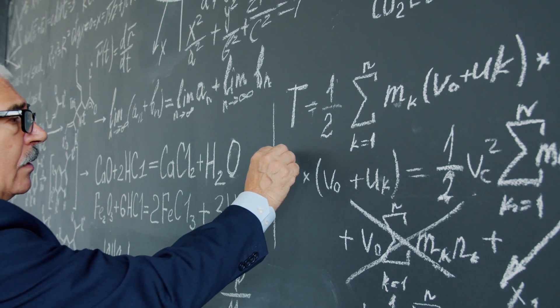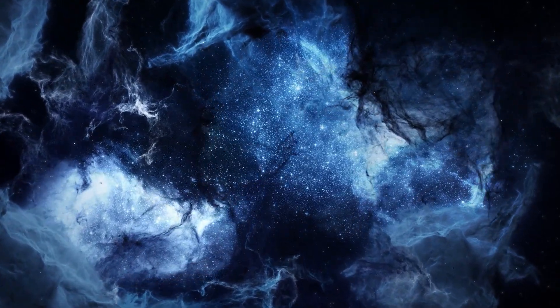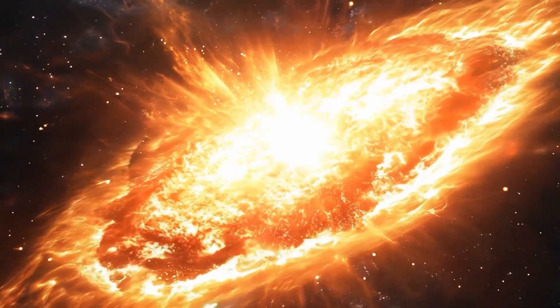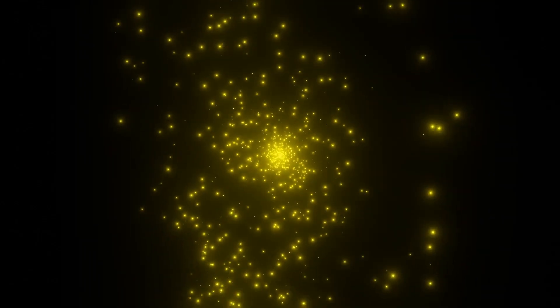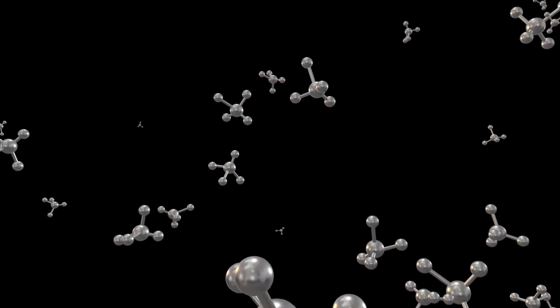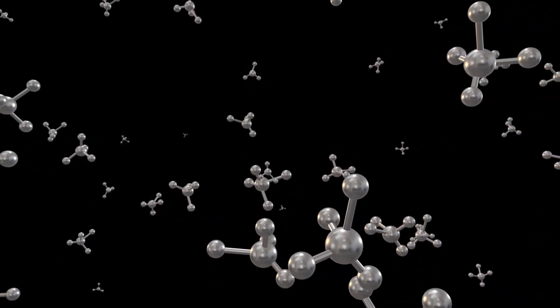There are several hypotheses regarding the end of the universe, and one of the most discussed is the theory of heat death. According to this theory, the universe will eventually reach a state of thermodynamic equilibrium, where all energy is evenly distributed, and no processes capable of sustaining life will remain. Stars will burn out, planets will lose their orbits, and matter will break down into elementary particles. In this state, the universe will become empty and cold, and no processes will take place. This process will take billions of years, and will result in residual particles such as neutrinos and photons being the only elements filling the space.